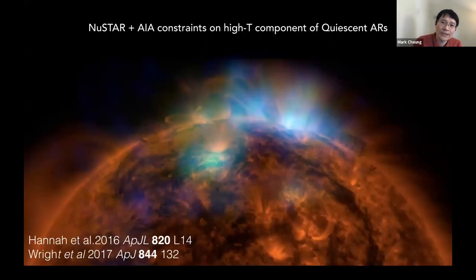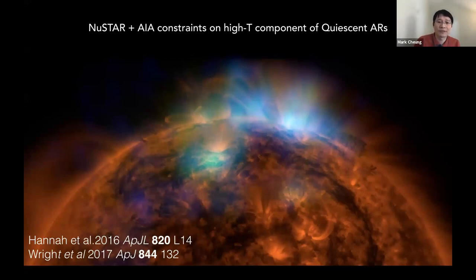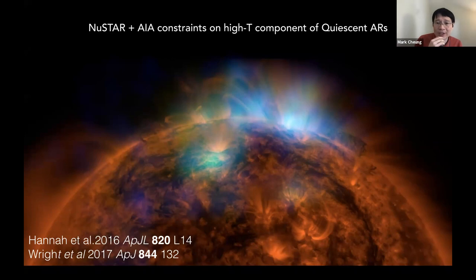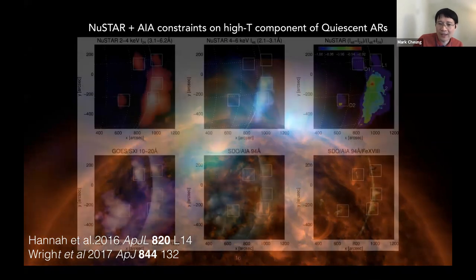That includes NuSTAR. People have used NuSTAR to observe the sun together with AIA to constrain the higher-temperature components of the differential emission measure of active regions. AIA alone doesn't provide strong enough constraints at the high-temperature end, so it's beneficial to use X-ray telescopes to aid that.